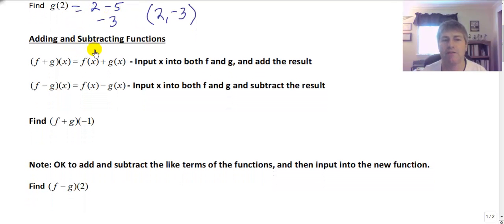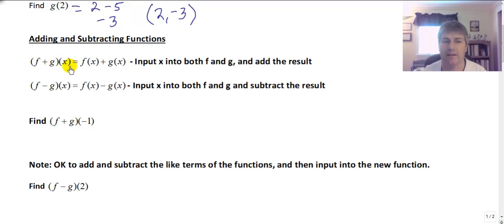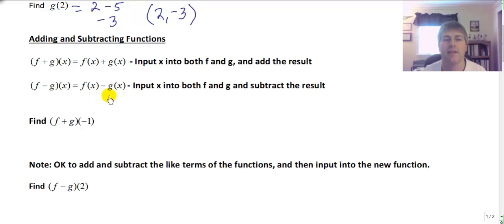We can add and subtract functions. So f of x plus g of x means put some value of x into both the f and g functions and then add the results. You will also see that written as f plus g of x. We can do the same with subtraction — f minus g of x means find f of x, put x into the f function and calculate that value, then put the same x into the g function, calculate that value, and subtract your results. Here's an example: f plus g of negative 1.